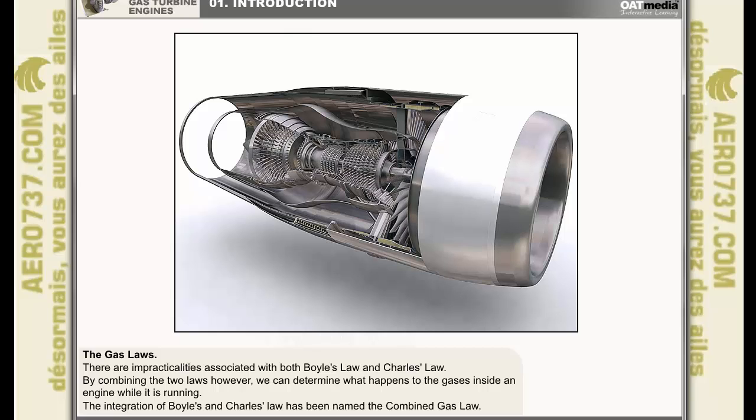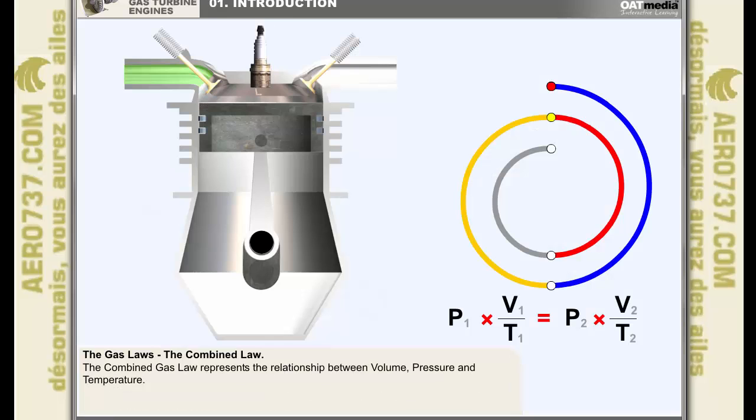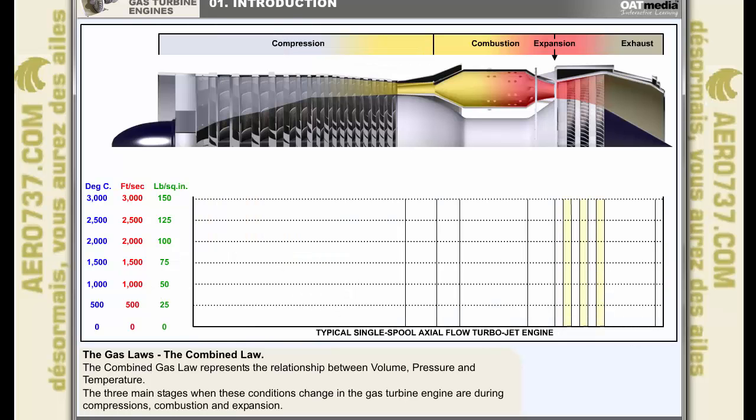With the scientists' usual lack of imagination, they have named the integrated Boyle's and Charles' law the combined gas law. The combined gas law represents the relationship between volume, pressure, and temperature. This may be shown as P1 times V1 over T1 equals P2 times V2 over T2. The three main stages when these conditions change in the gas turbine engine are during compression, combustion, and expansion.